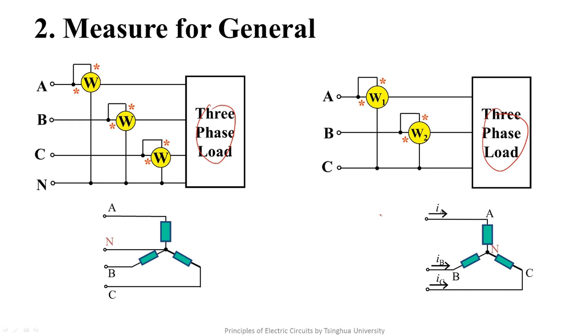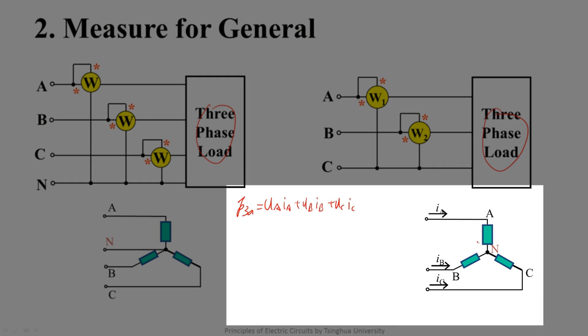We have to derive it. Suppose the load is with this connection. The instantaneous power absorbed by 3-phase load equals this. UA, UB and UC are phase voltage of the three phases. By applying KCL on this node, we know IC equals minus IA minus IB.